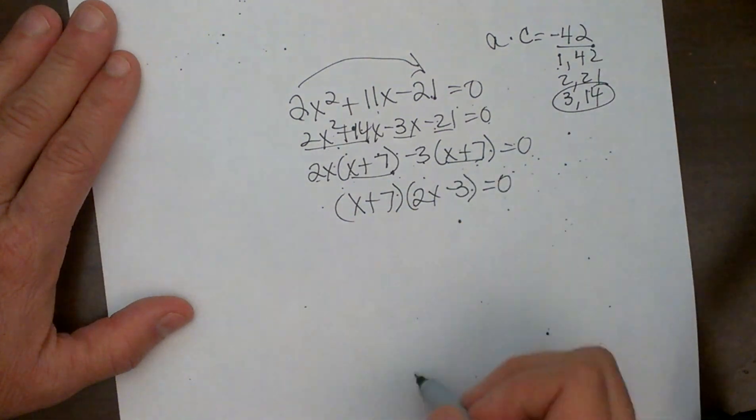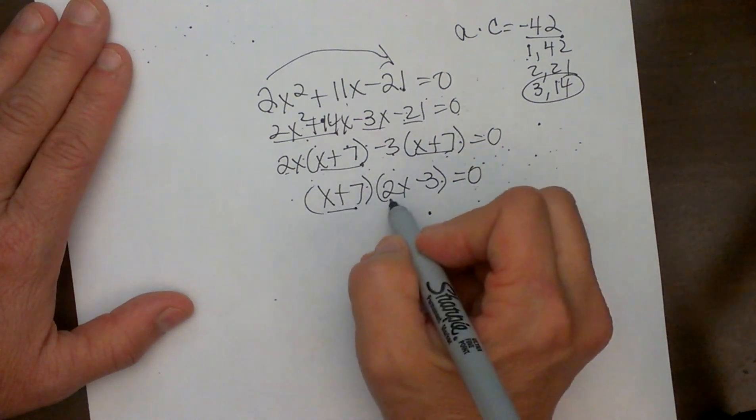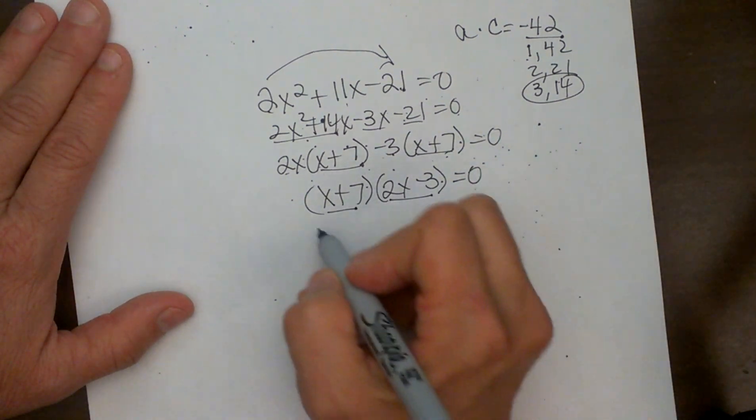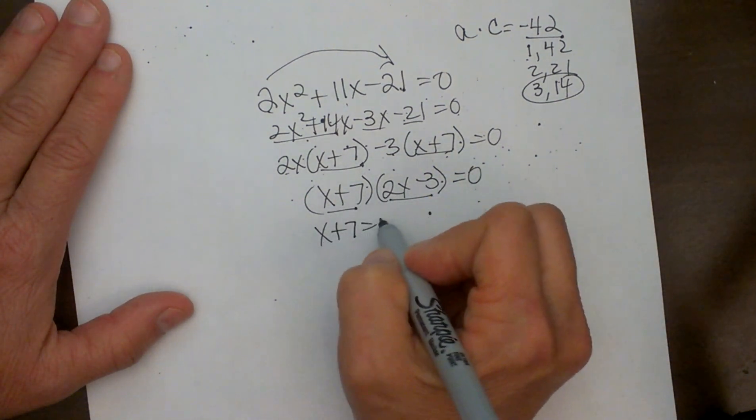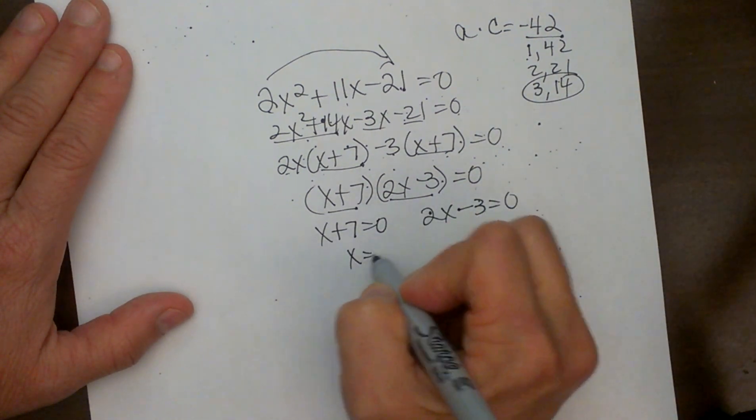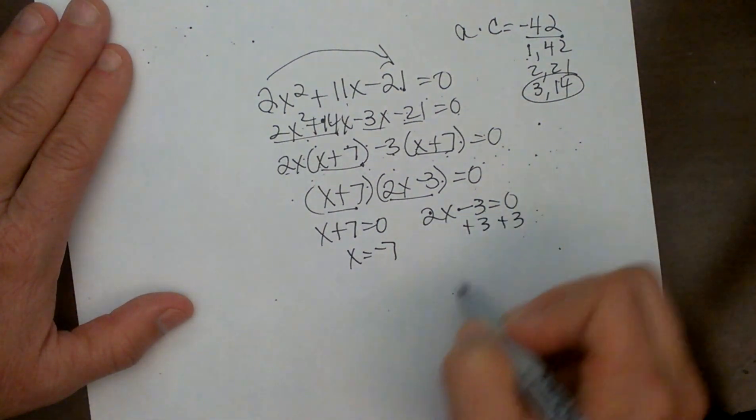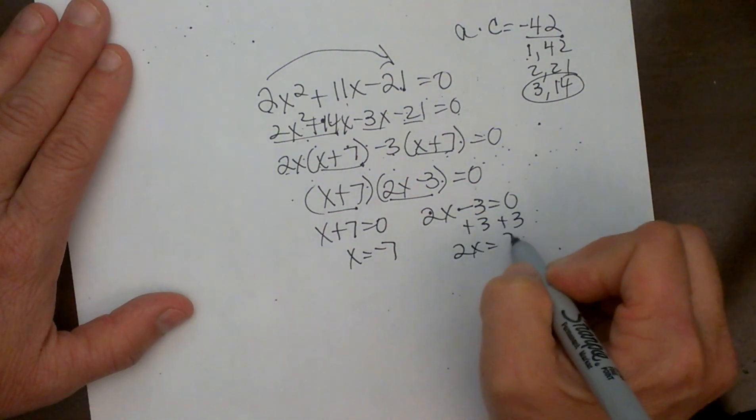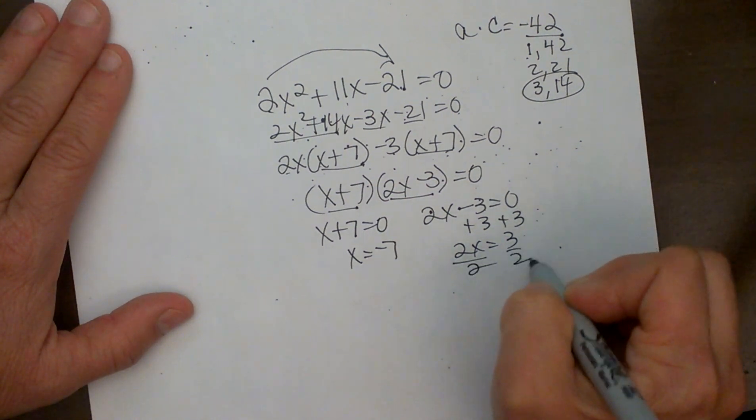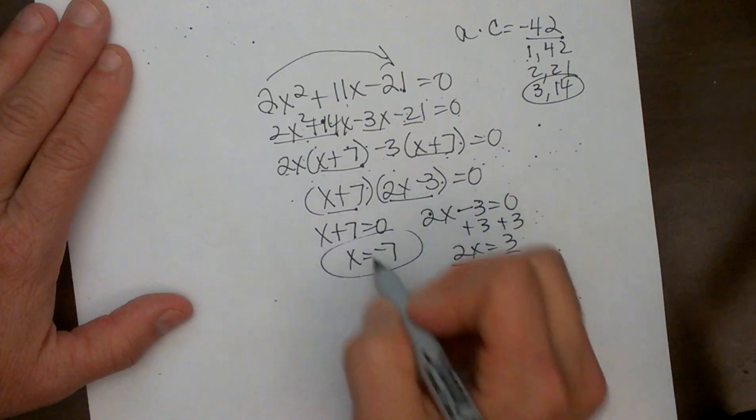Now my students should already know how to factor by grouping. We are just reviewing. Now once you get down to here and it is factored and set equal to zero, we set each factor equal to zero to find our two solutions. And the first solution is negative seven and the second solution is a two step equation. Add three and then we have to divide by two. So x is three halves and negative seven.